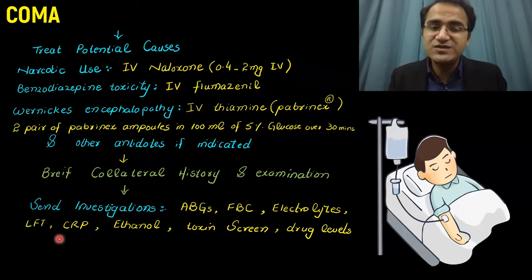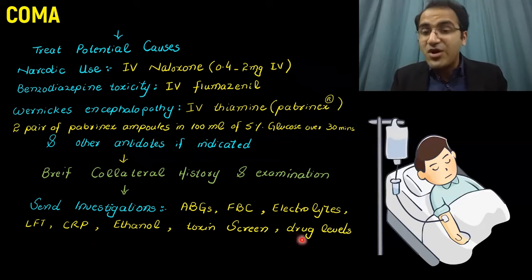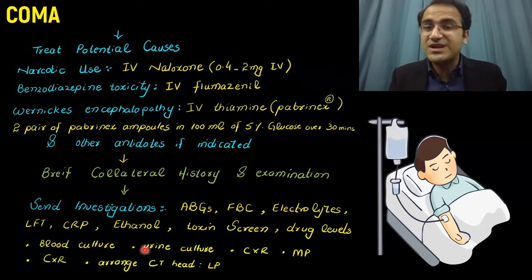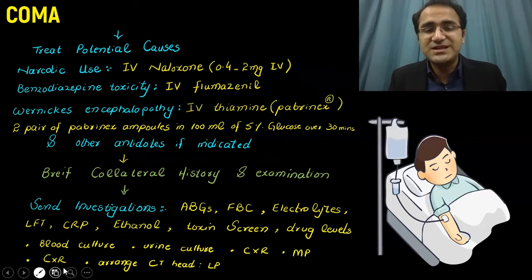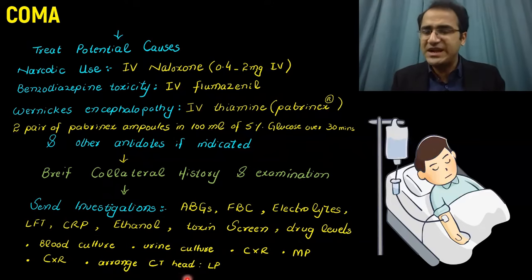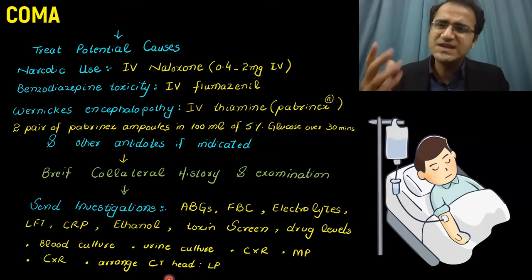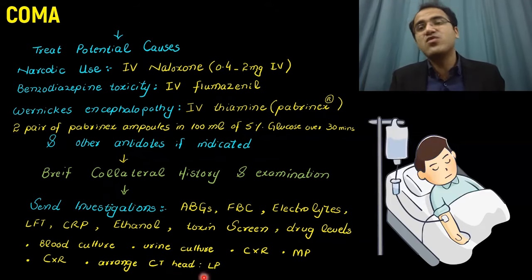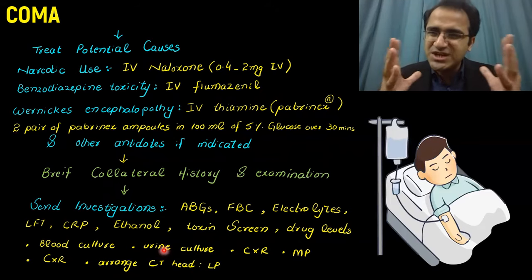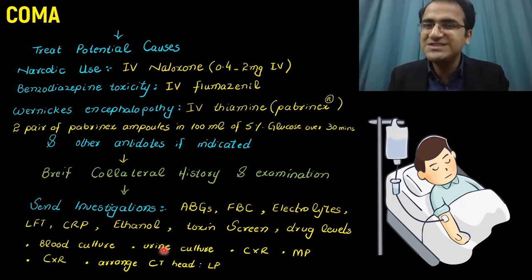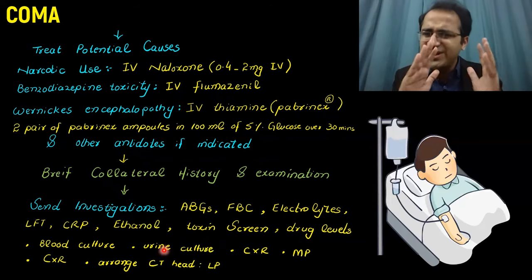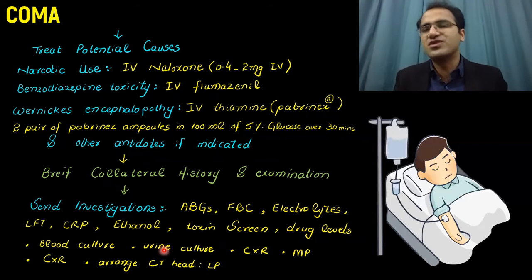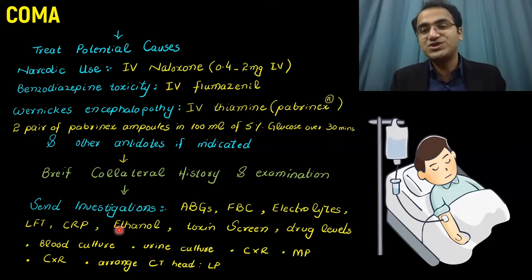Send ABGs, full blood count, electrolytes, LFTs, CRP, ethanol screening, toxicology screening — which is very important — drug levels, blood cultures if you suspect infection, urine culture, chest X-ray, and malarial parasite screen. Arrange a CT head if indicated — for example, if there is head trauma. After CT, consider lumbar puncture if needed. The signs and symptoms will hint you toward the diagnosis, and accordingly you proceed with investigations.